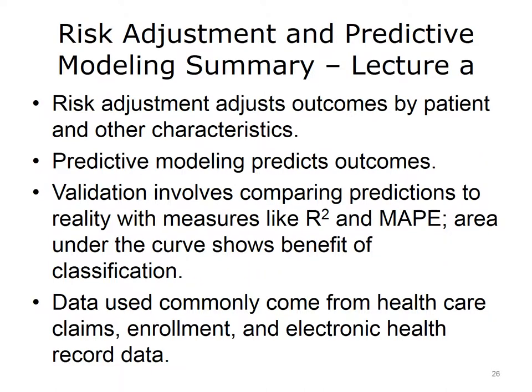This concludes Lecture A of Risk Adjustment and Predictive Modeling. In this lecture, we showed that risk adjustment is the process of adjusting outcomes by patient variables, such as age, health status, and other conditions, while predictive modeling attempts to predict the likelihood of an outcome. We discussed how validating the models requires comparing predictions to reality. We discussed R-squared, or proportion of variation explained, the mean absolute prediction error, area under the curve, and other classification metrics. Finally, data come from many different sources, but most common are healthcare claims, enrollment, and electronic health record data.